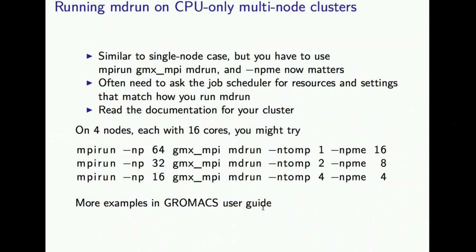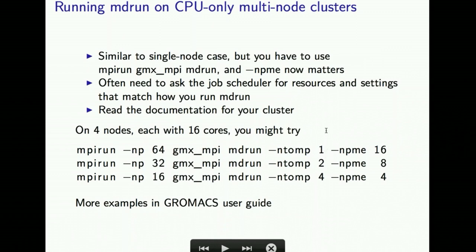If running on CPU only with multi-node clusters, you need to use gmx_mpi mdrun and think about a few issues. On four nodes each with 16 cores, there are several alternatives for grouping cores. These different parameters produce different amounts of OpenMP overhead versus MPI overhead — one of these will turn out to be better for your simulation and hardware in practice. Generally, with only CPUs, NtoMP of 1 or 2 is about as far as you're going to see with current hardware and current GROMACS.